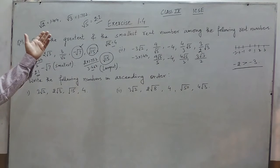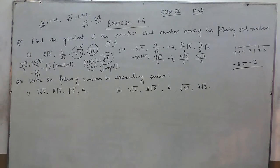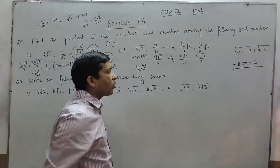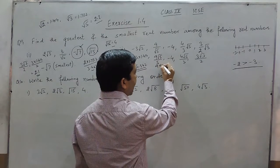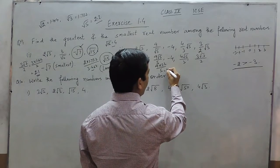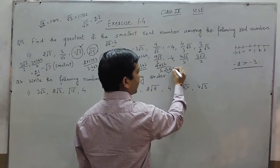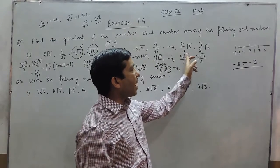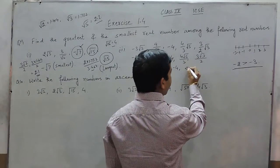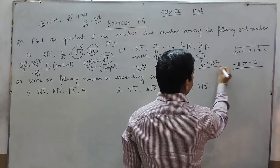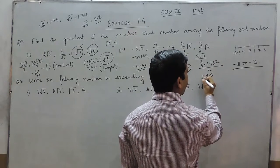These are approximate values — 1.732 is also not the exact value of under root 3; they have to be taken with approximation. So minus 3√2 gives approximately minus 4.242. The value of 9√5 upon 5 — that is 9 into 2.2 upon 5 — comes out to be approximately 4.2. There is also minus 4. And 4√5 upon 3 means 4 multiplied by 2.2 upon 3, which is less than 4. And 3√3 upon 2 is approximately 2.5.